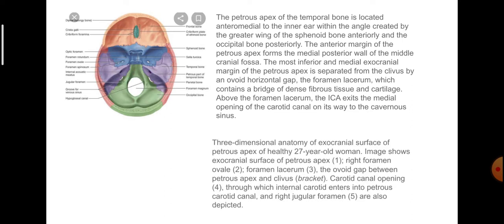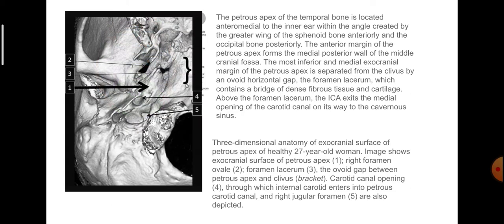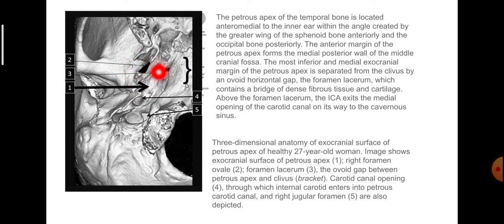Three-dimensional anatomy of the exocranial surface of the petrous apex of a healthy 27-year-old woman. The image shows: number one, the petrous apex as a pyramidal projection; number two, the right foramen ovale — the ovoid gap; and number three, the foramen lacerum, bridged by fibrous tissue.